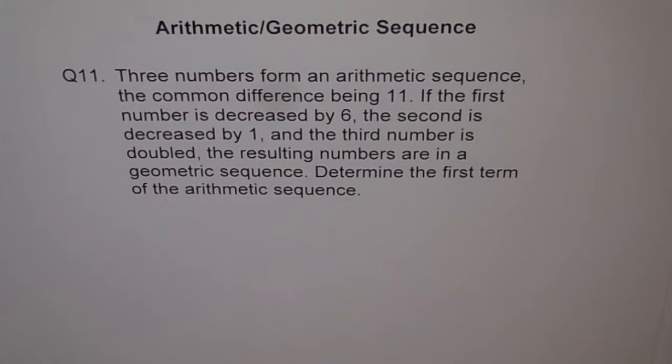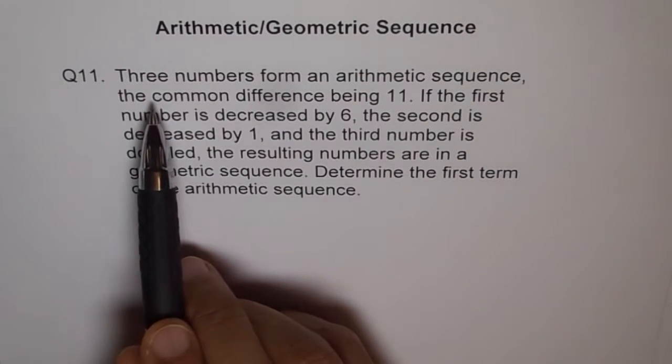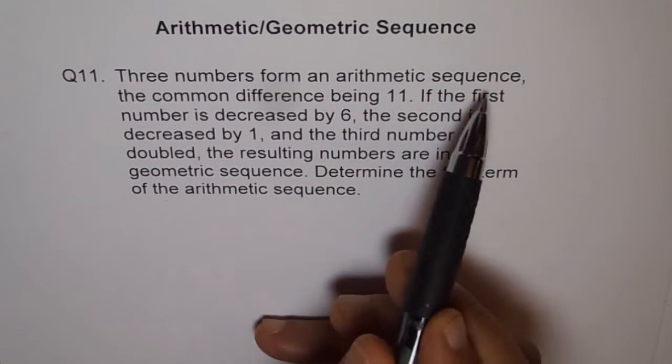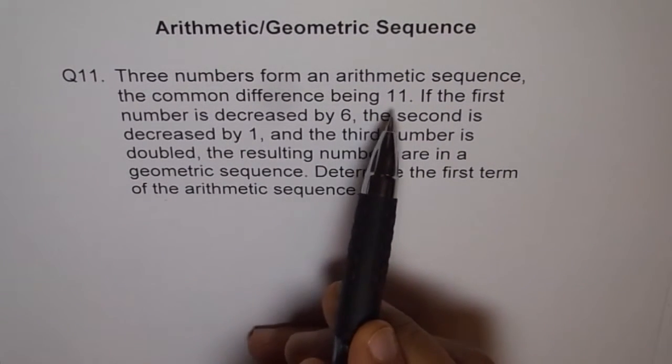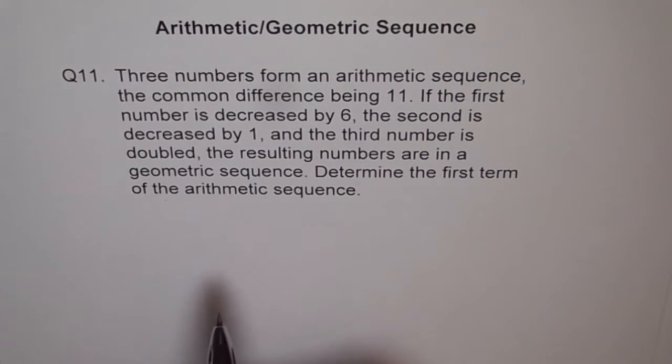Now let's read it again and try to do the question. Three numbers form an arithmetic sequence, common difference being 11. First three numbers, so first part, three numbers with common difference 11.